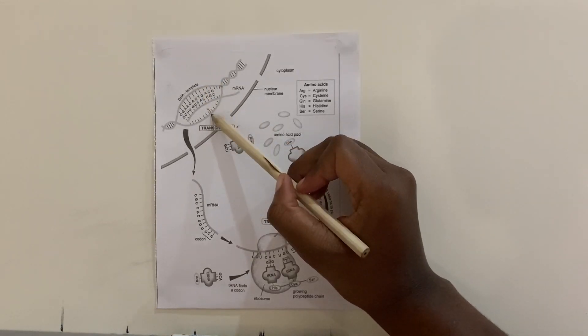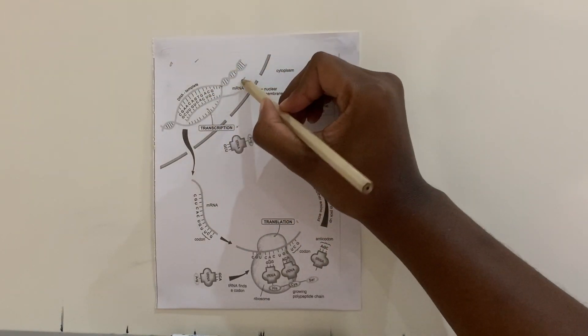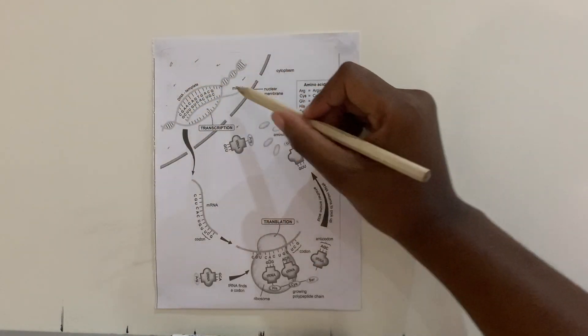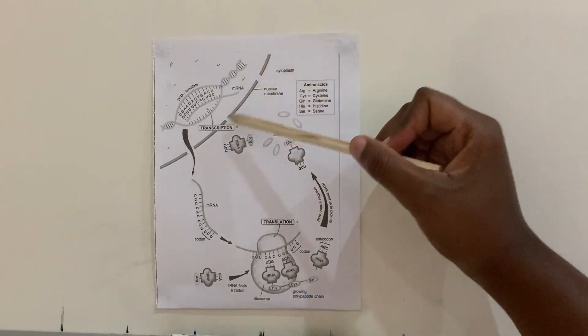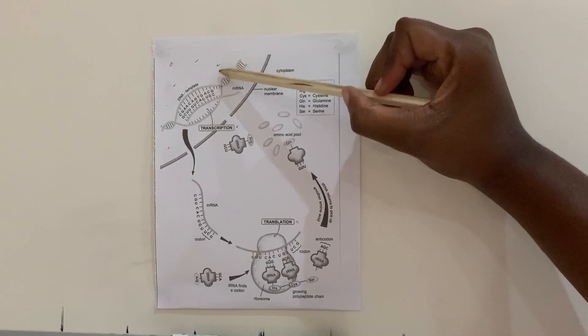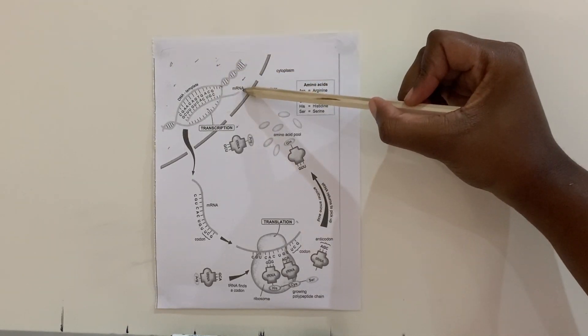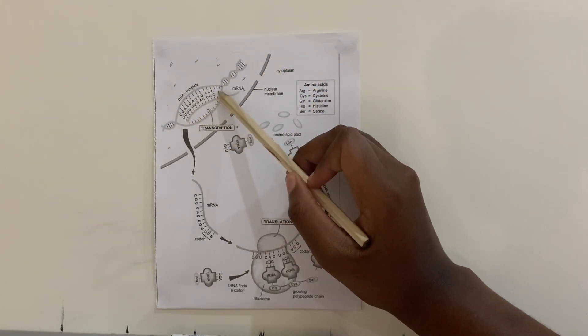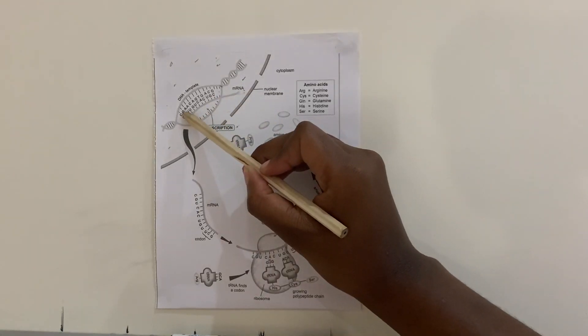So here you can see free RNA nucleotides that are found in the nucleoplasm, basically inside the nucleus. The free RNA nucleotides are going to be used to build the mRNA strand. As you can see here, this is the DNA template, and then the mRNA forms according to the nitrogenous bases that are on the DNA template.